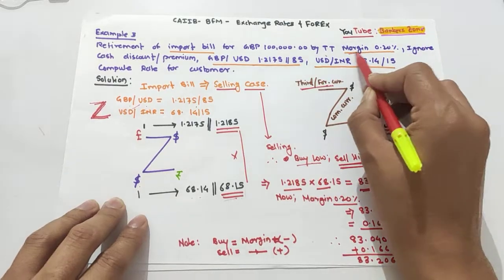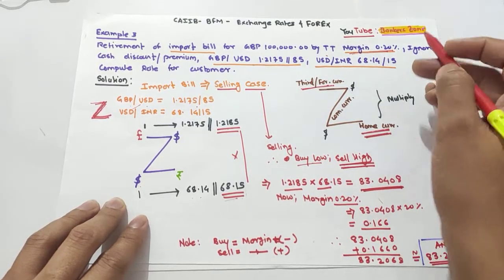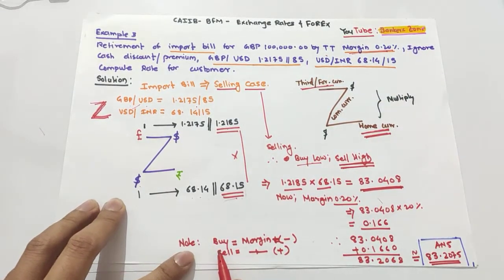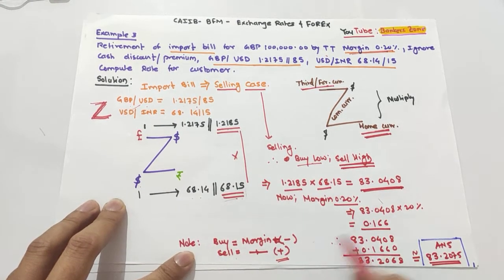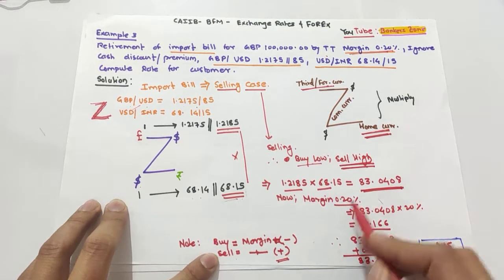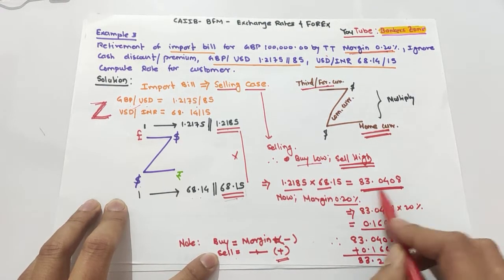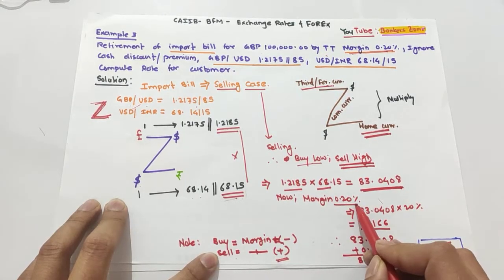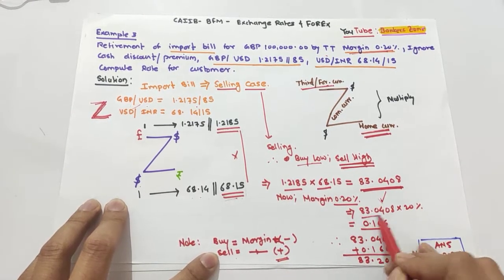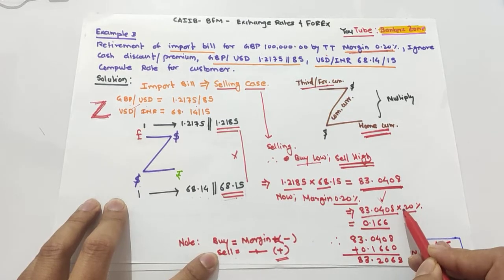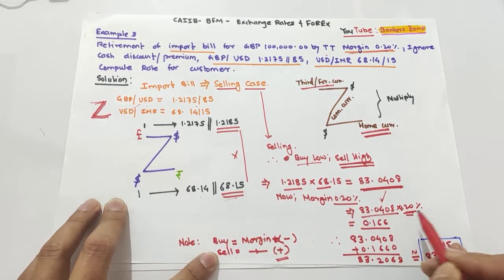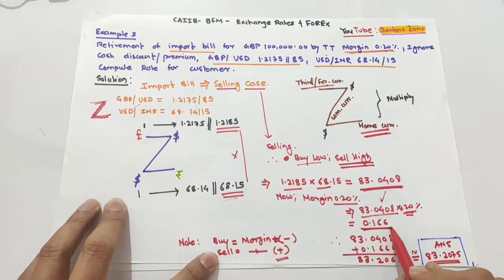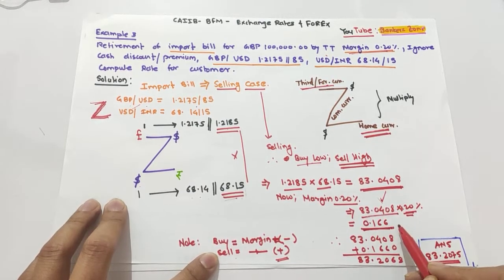A margin of 0.20% is given. Since the case is selling, we add the margin. So 0.20% of 83.0485 gives 0.166. Adding this margin to the base rate gives us 83.2068.